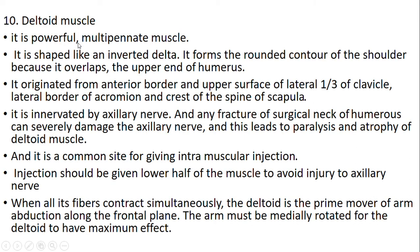Tenth question: deltoid muscle. It is a powerful, multipennate muscle shaped like an inverted delta. It forms the round contour of the shoulder because it overlaps the upper end of the humerus. It originates from the anterior border and upper surface of the lateral one-third of the clavicle, lateral border of the acromion, and crest of the spine of the scapula. It is innervated by the axillary nerve; any fracture of the surgical neck of the humerus can severely damage the axillary nerve, leading to paralysis and atrophy of the deltoid muscle. It is a common site for intramuscular injection; injections should be given in the lower half of the muscle to avoid injury to the axillary nerve. When all its fibers contract simultaneously, it is the prime mover of arm abduction in the frontal plane.